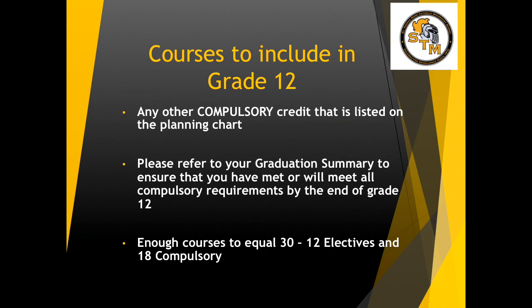What courses should you include? That depends on where you are, but also any other compulsory credits that are listed on the planning chart. Please make sure that you check your Groups 1, 2, and 3 and that you have either earned those credits or are on track to earn those credits. Please refer to your graduation summary as this will help you ensure you have met all of the compulsory requirements — enough courses to equal 30, 12 of them electives and 18 compulsory.